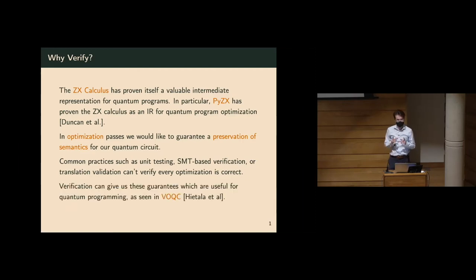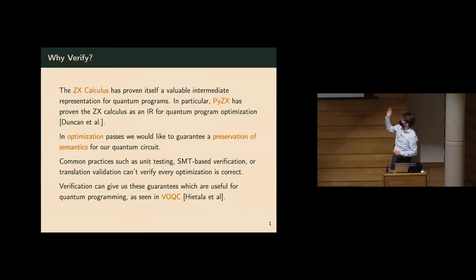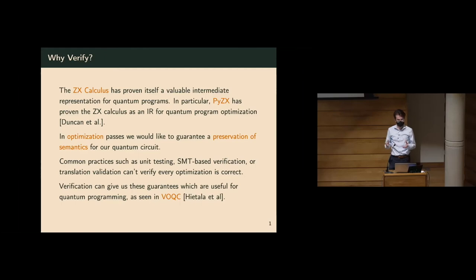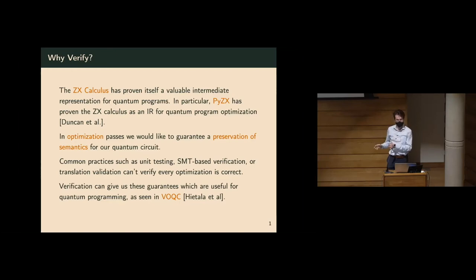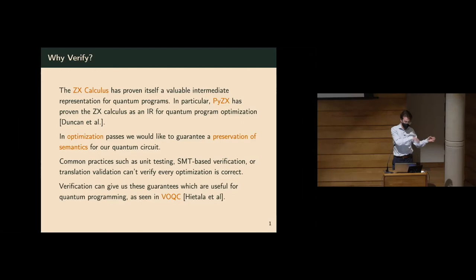But verification actually can give us these guarantees. Vox is a quantum program circuit optimizer that actually uses the same methods to verify the optimizations are completely correct. This gives us some peace of mind. If we're writing a quantum program, we don't want to worry about bugs in the compiling optimizer, in the actual code we're writing, and in the noisy nature of quantum computers. If we can eliminate bugs from at least the optimizing compiler, it gives us peace of mind to go back and look at our code.